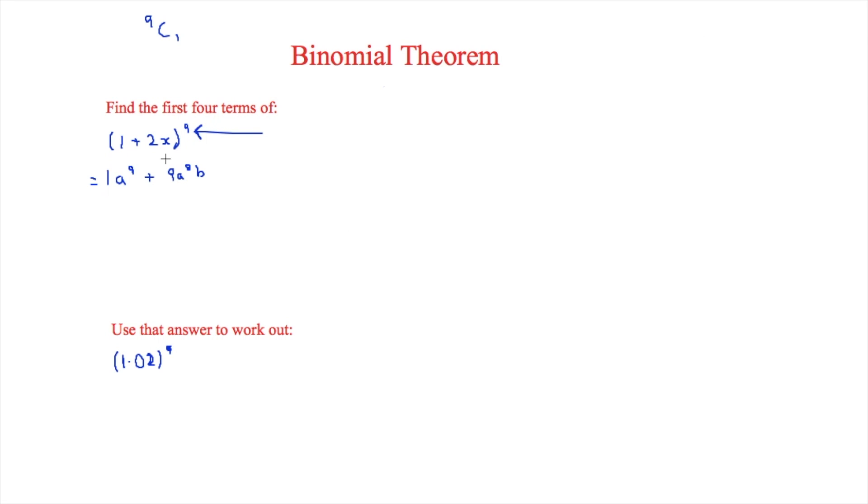So if that was 5 for example the first one would be a to the 5. The second one would be 5 to the a to the 4b. Now the next one we're going to have to have two b's but again we're going to have to use this nCr.